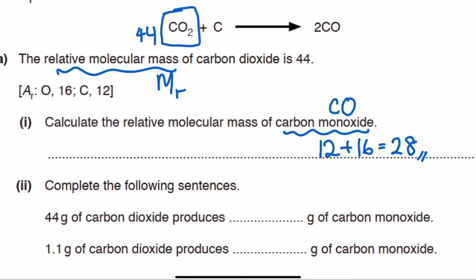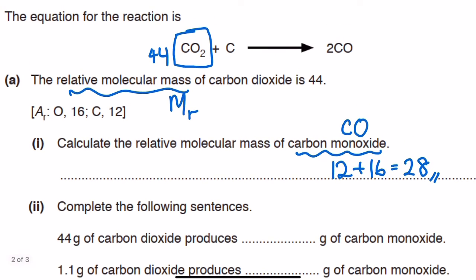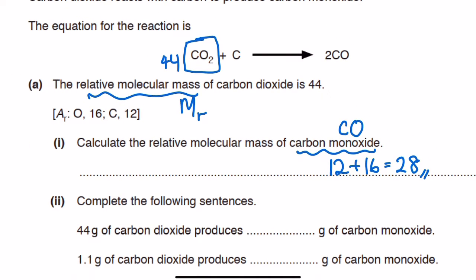Part two requires you to complete the following sentence: 44 grams of carbon dioxide will produce blank grams of carbon monoxide. Going back to the main question, we know the relative molecular mass of carbon dioxide is 44, so 44 grams corresponds to that mass.